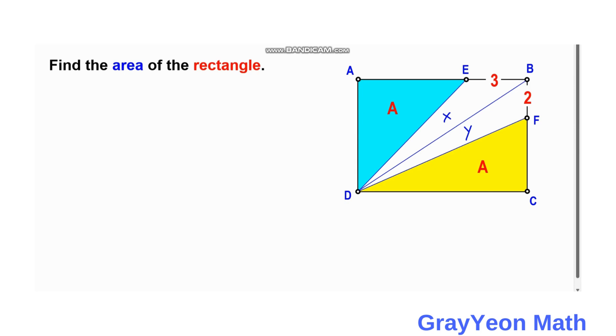Okay, and this diagonal BD, you notice it simply divides the area of the rectangle into two equal parts. So we can actually equate the two areas: the area above the diagonal BD, so that will be A plus x, is equal to the area below the diagonal BD, so that is y plus A. In this equation we can actually cancel out this A on both sides, so we can say that x is equal to y, and therefore these two areas are actually equal.